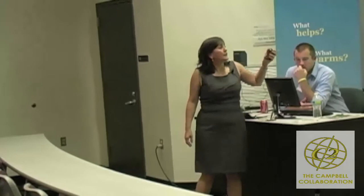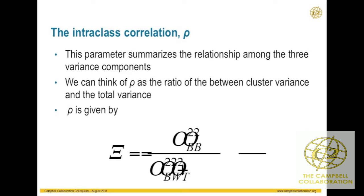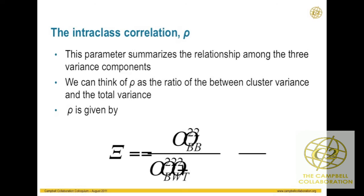We also have another important parameter: the intraclass correlation coefficient, which we denote with rho. We can think of it as the ratio of the variation that occurs between the cluster means to the total variation — how much of the total variation is actually between clusters, between schools, clinics, or whatever group we have — expressed as a fraction of the total variation. We usually get some fraction like 0.1 or 0.01.